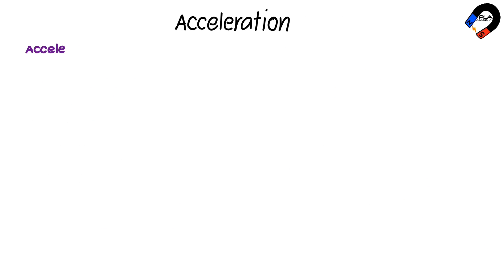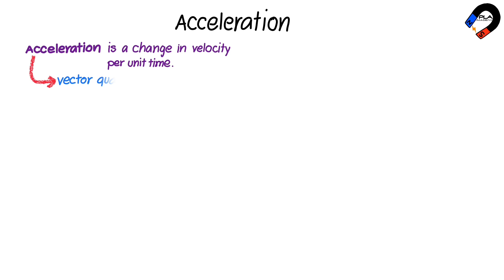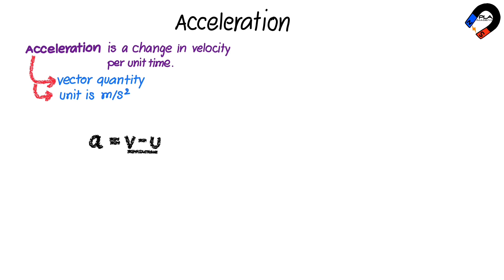Acceleration is change in velocity per unit time. Acceleration is a vector quantity, which has both magnitude and direction. Its unit is meters per second squared. Therefore, the equation of acceleration is: a equals v minus u over t.